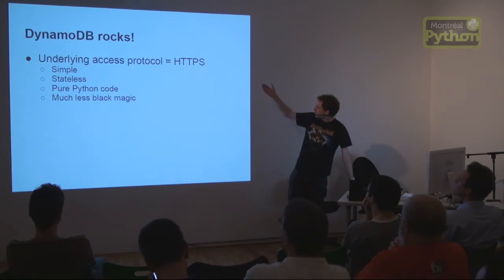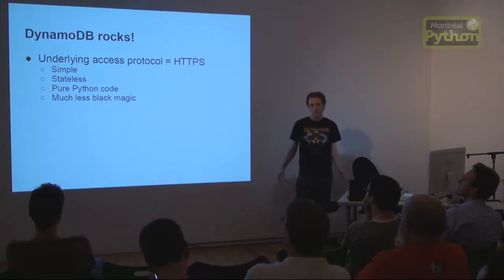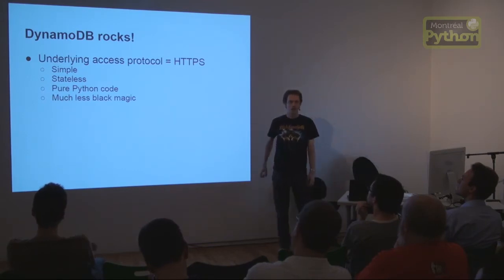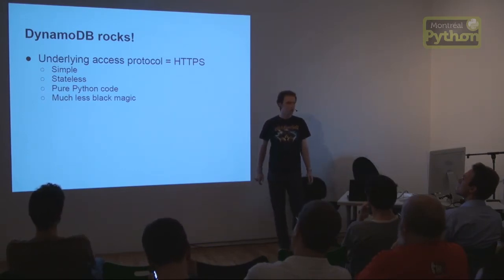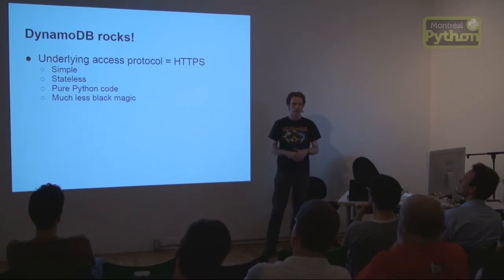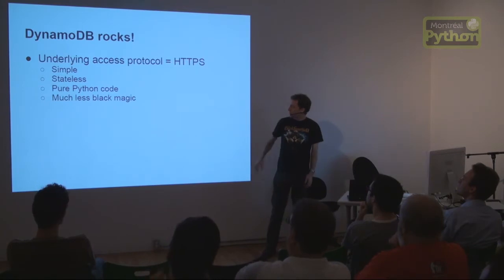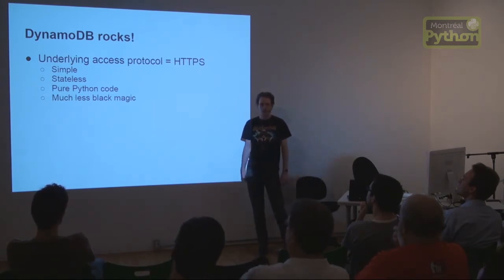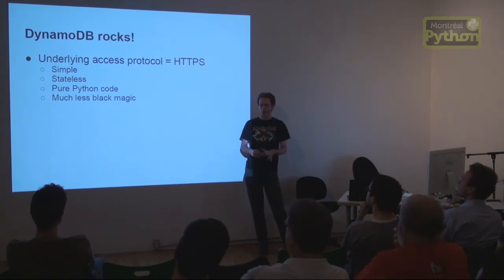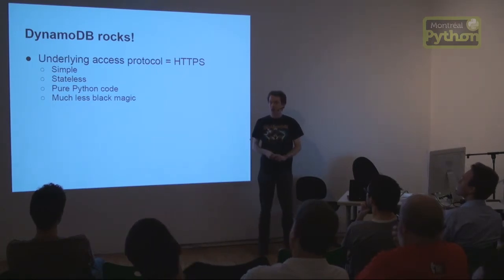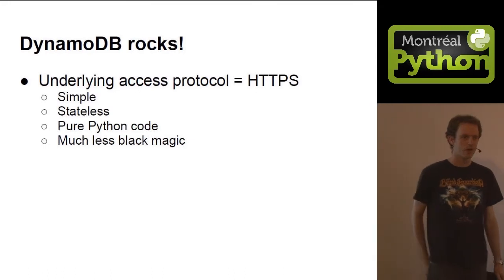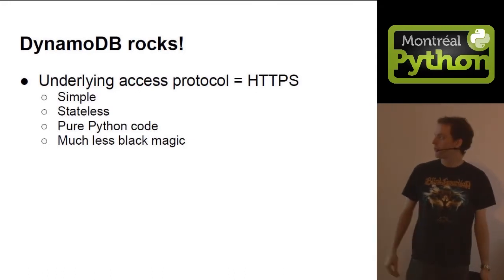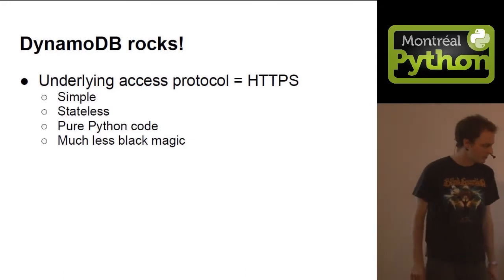The underlying access protocol is HTTPS, so it's simple and stateless. It is accessed by pure Python code provided by the Boto library — the standard tool for accessing all Amazon web services. There's much less black magic than with SQL databases, and you can monkey-patch it with DynamoDB Mock, which is very useful for unit and functional tests.